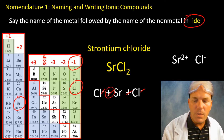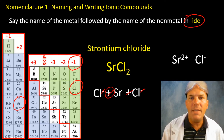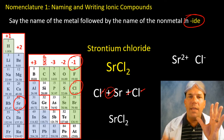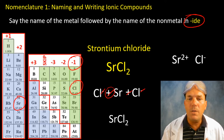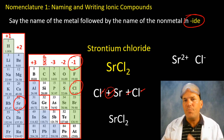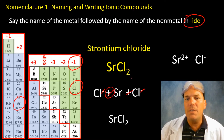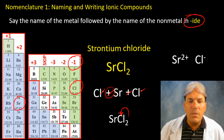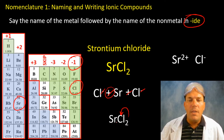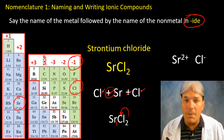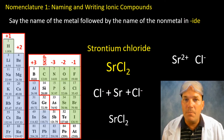The metal always goes first when writing ionic compounds, then the non-metal. Because there are two chlorines, we use the subscript two after Cl. There is one strontium, but we don't write that one — it is implied.